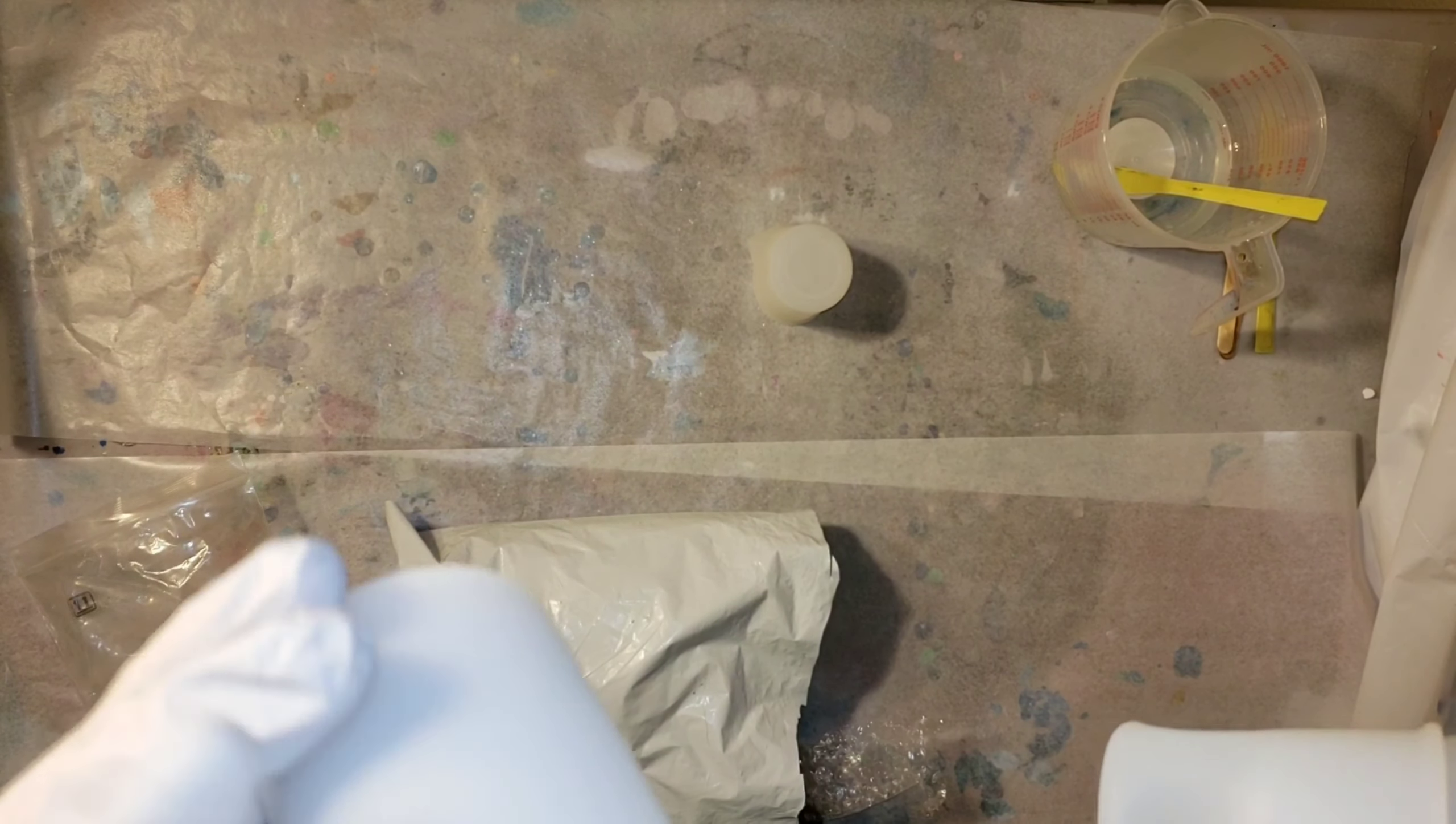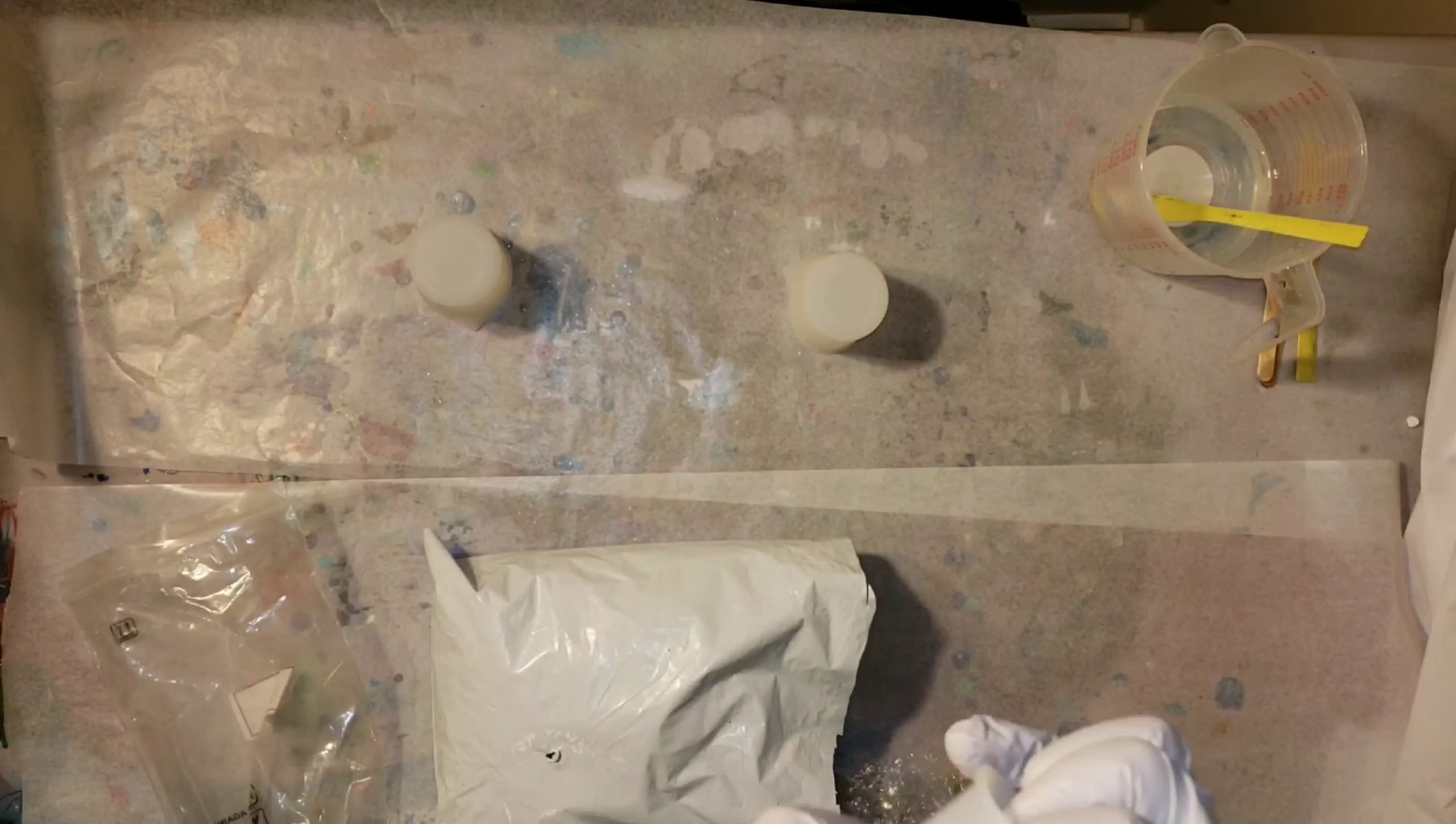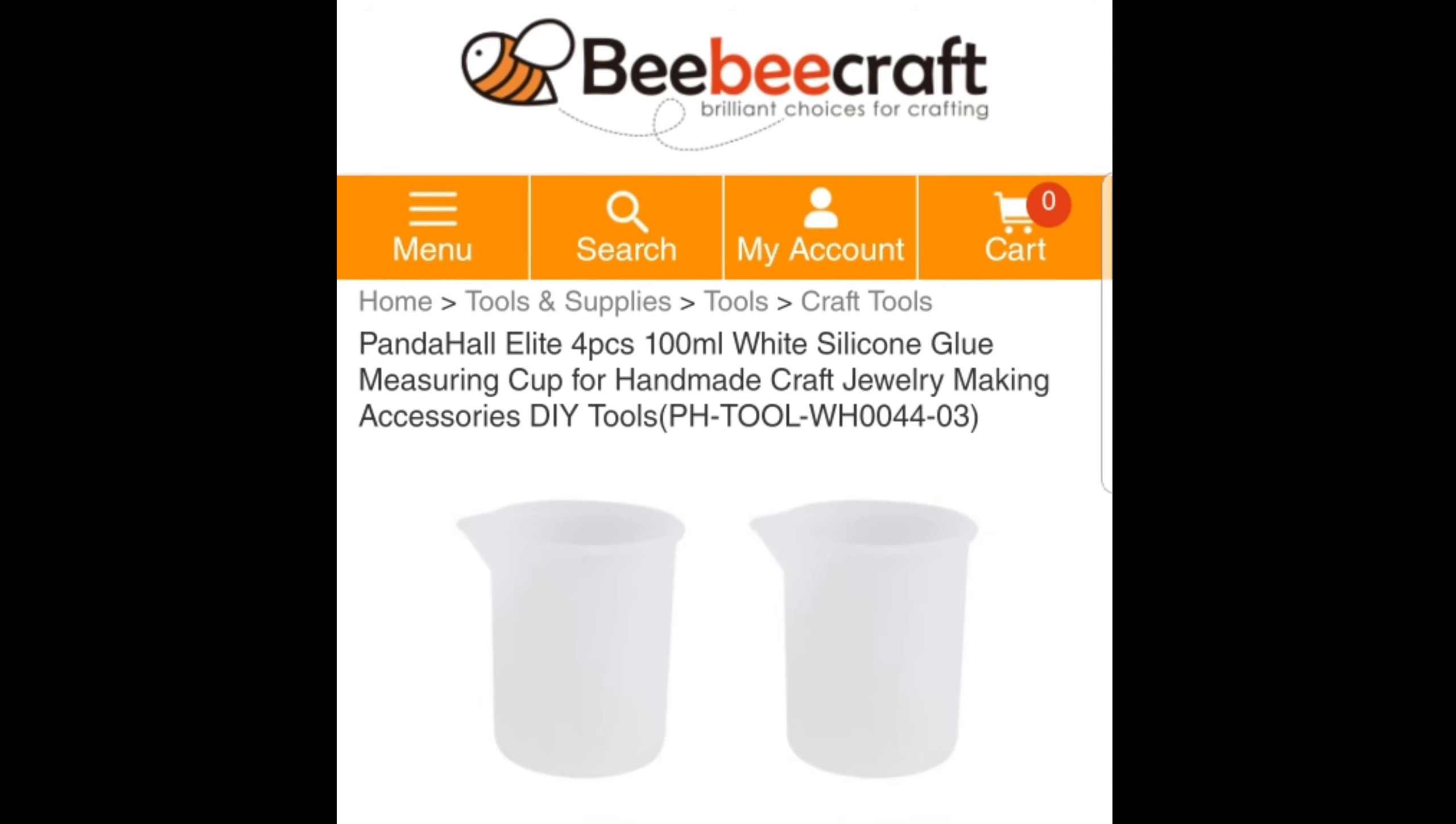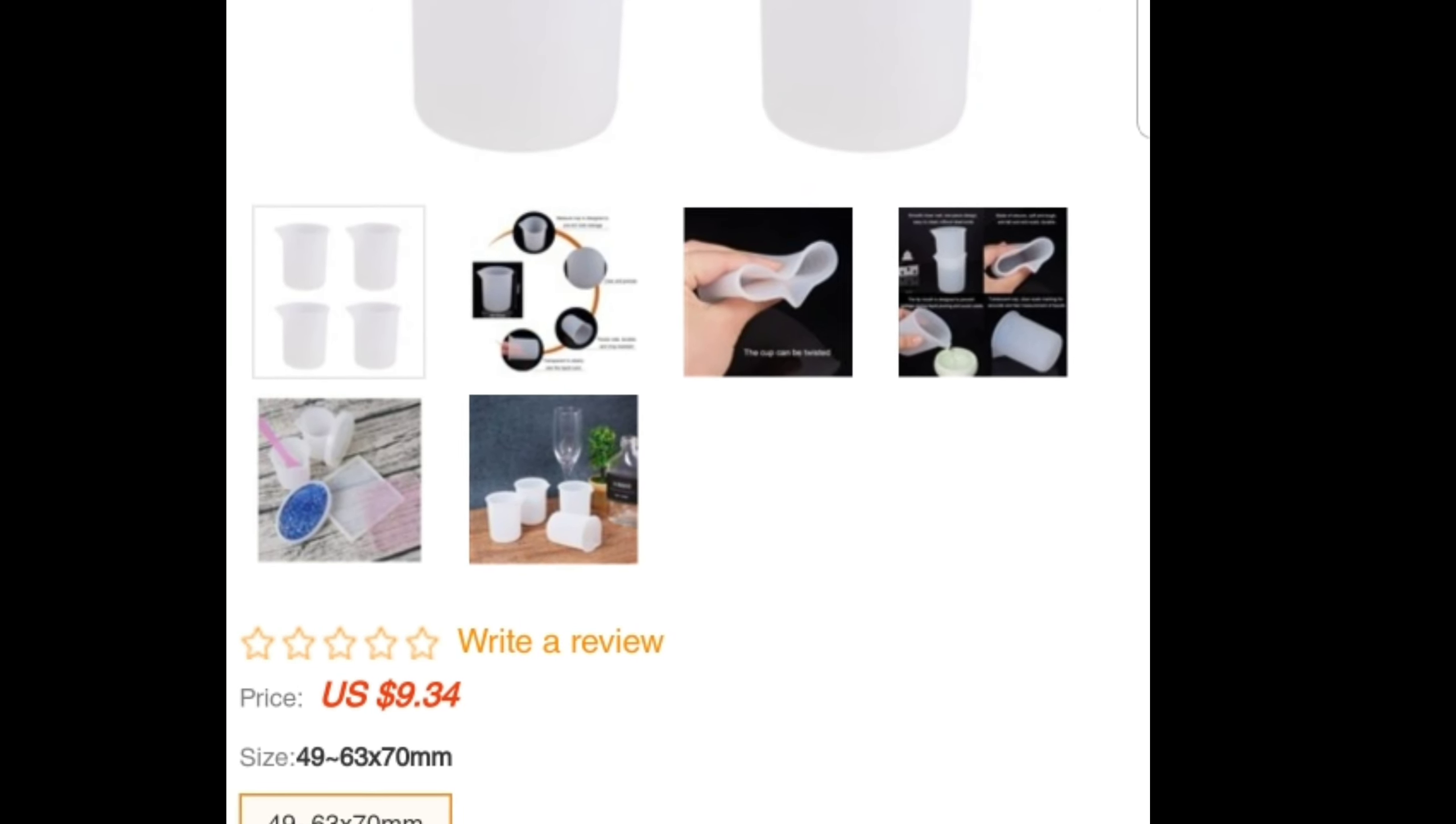So I picked out three things. These silicone mixing cups are really awesome. I've been wanting some of these for a long time and they have the ML measurements, which is good when you're making little charms. Here's what they look like. You get four of them and they are only $9.34 for four, and they're really easy to use and clean out.